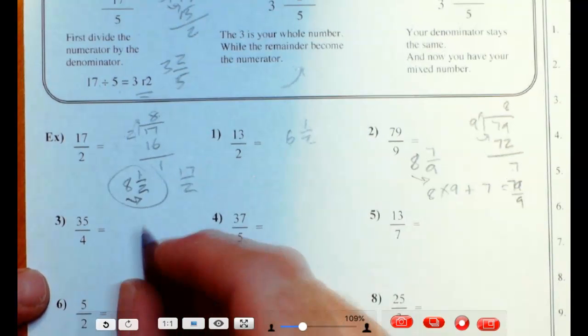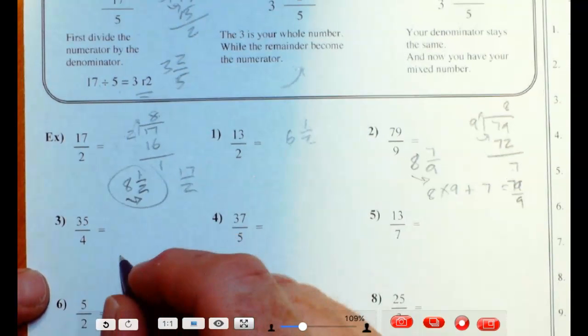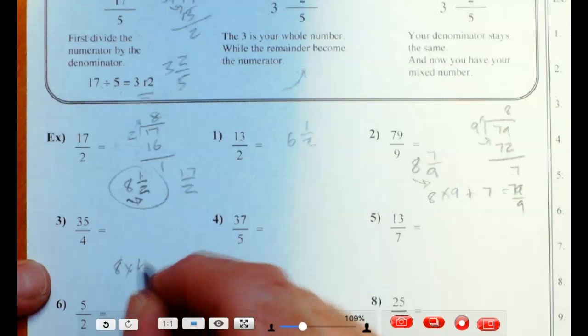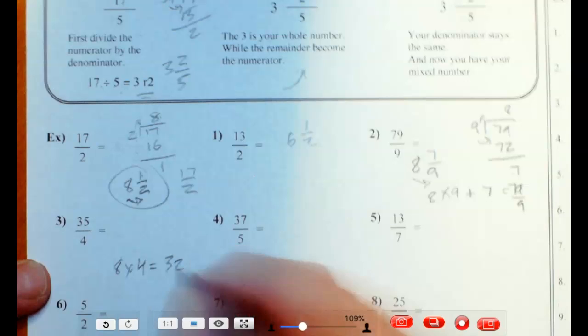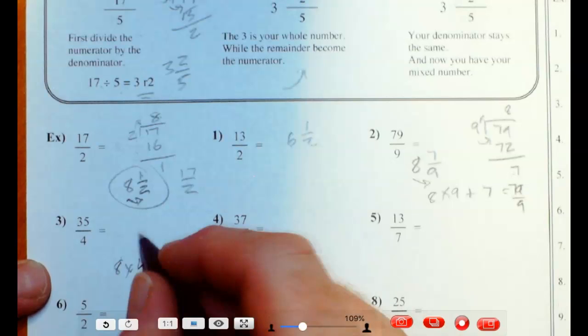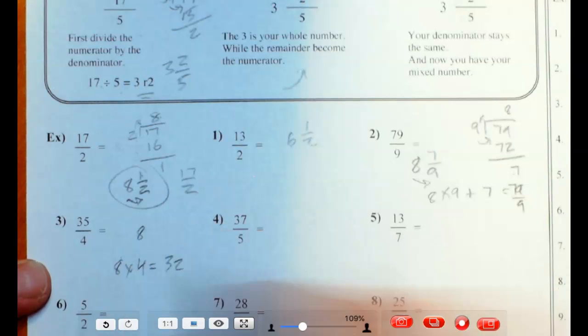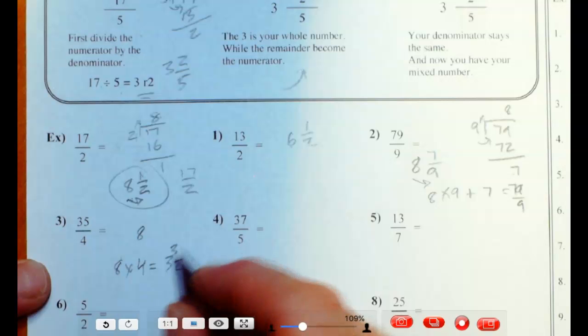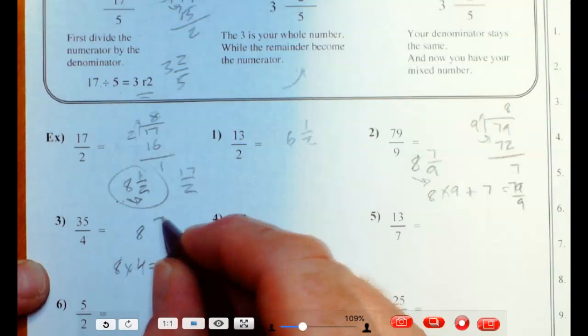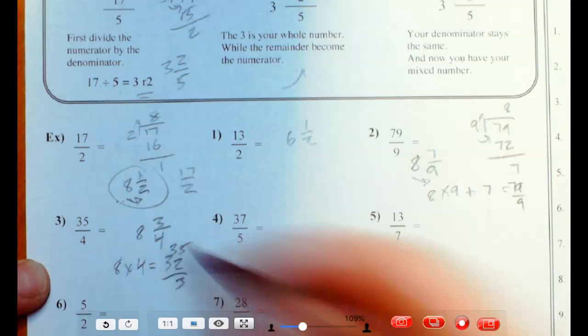35 fourths. Well, 35 divided by 4. Let's see. 35. Well, we could put that in there 8 times. 8 times 4 would be 32. That's pretty close. So it's going to go in there 8 times, and the difference between 32 and 35 is 3. So we have 3 fourths left over.